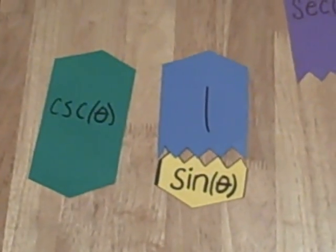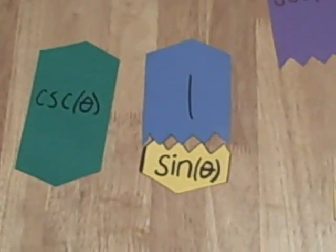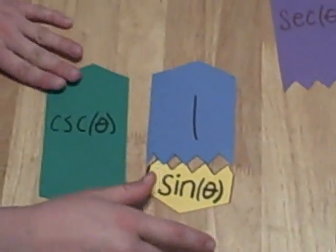Now that we're getting more comfortable using our trig manipulatives, let's look at some of their properties. The shapes of the manipulatives are made in such a way that pieces can go together.